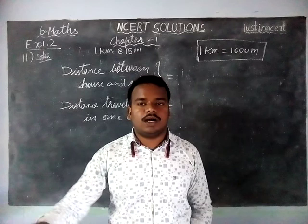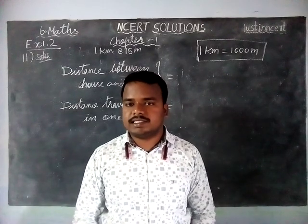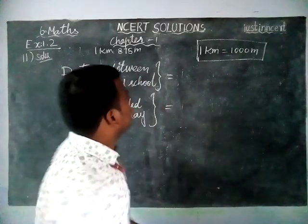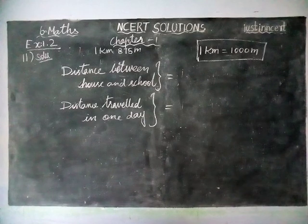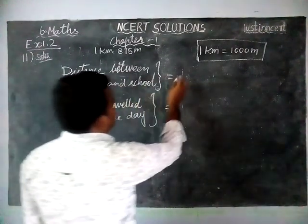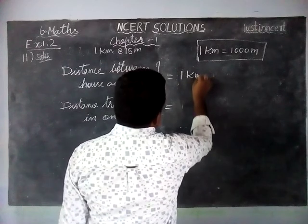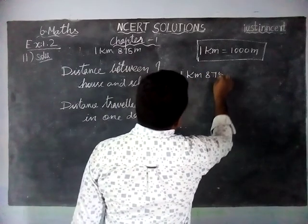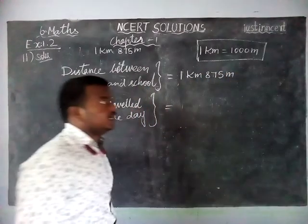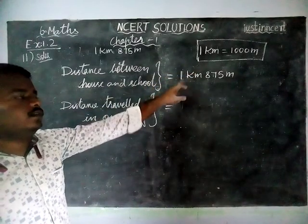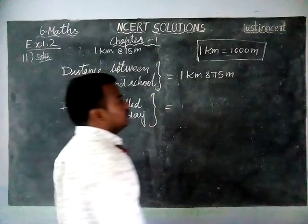Here a student is walking from home to high school. The distance is 1 km 875 m. So the distance between house and school is 1 km 875 m, and 1 km is equal to 1000 m. We are going to convert this into meters.